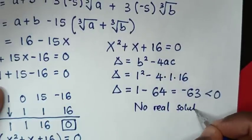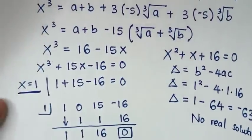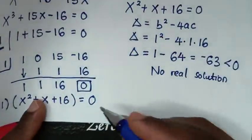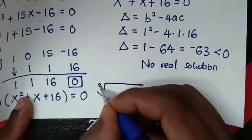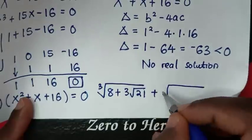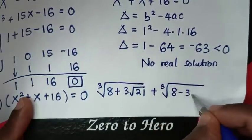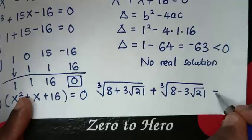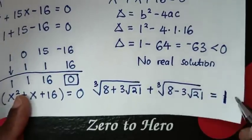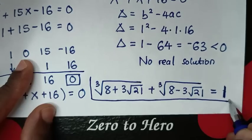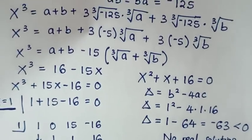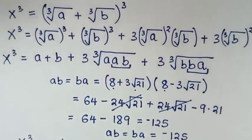Since we are finding a real value of x, the only solution is x equals 1. Therefore, cube root of (8 plus 3√21) plus cube root of (8 minus 3√21) is equal to 1. This is our simplified answer. Thank you. Don't forget to subscribe to my channel and see you in the next video, bye bye.